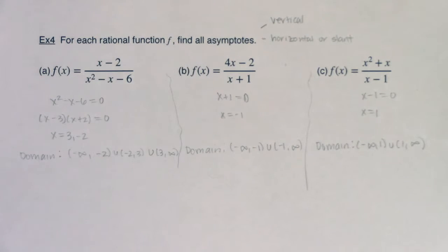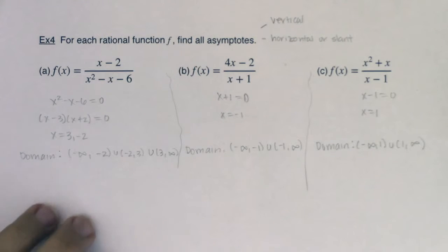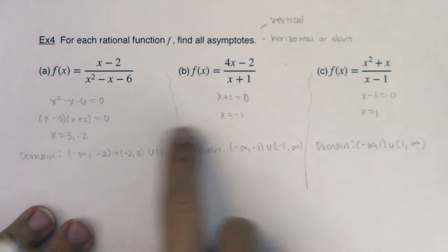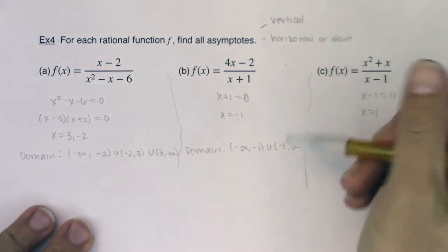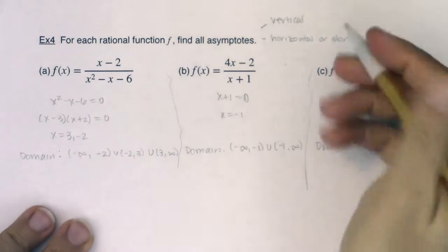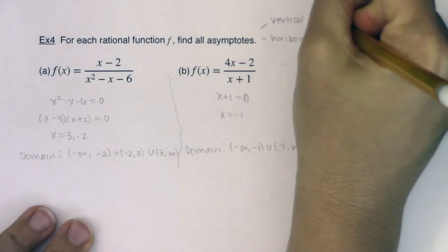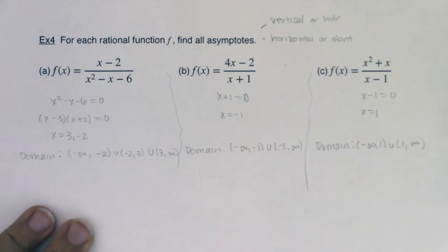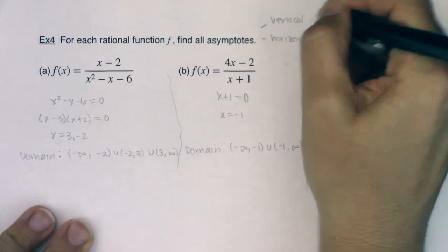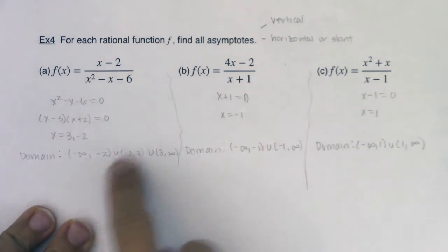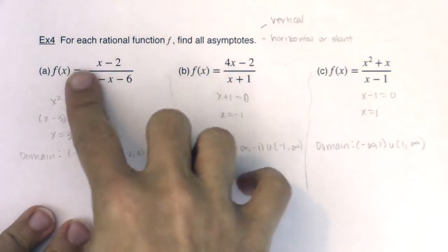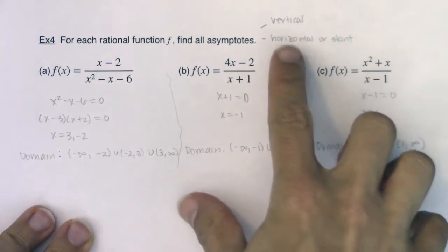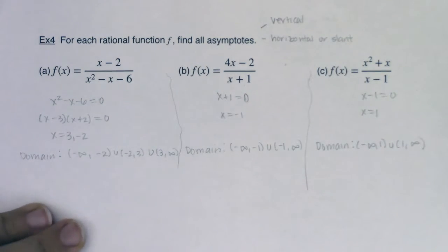You should always start with your domain — you want to know what you're working with. Because these numbers — three, negative two, negative one, and one — are possibly going to be vertical asymptotes. Anything that gets booted from your domain will either become a vertical asymptote or a hole. We're going to look at the ratio of the lead terms to determine if we have a horizontal or slant asymptote.